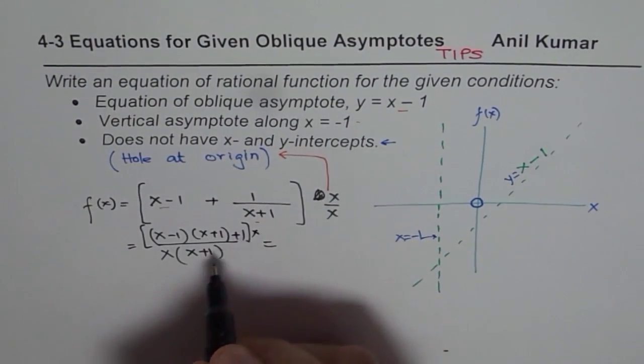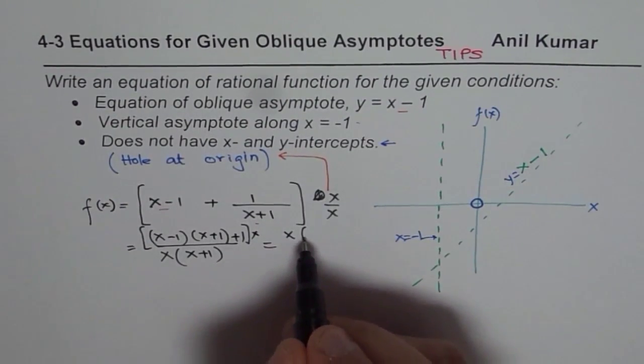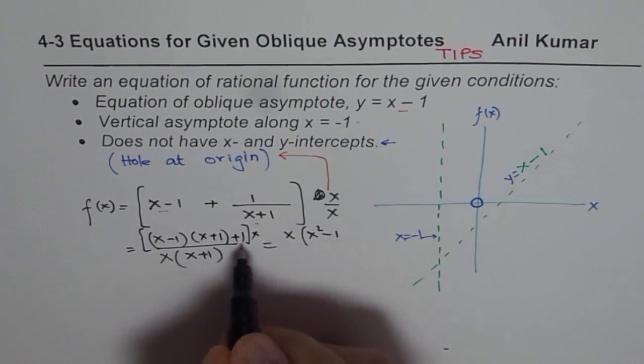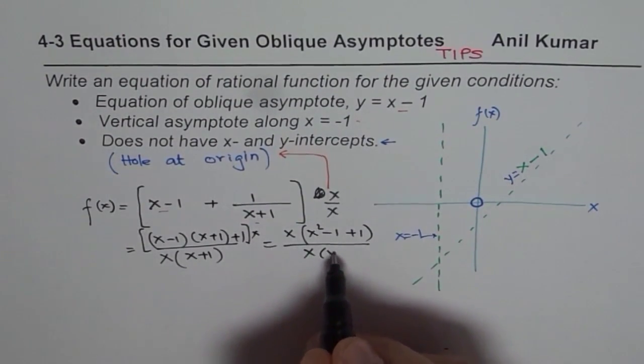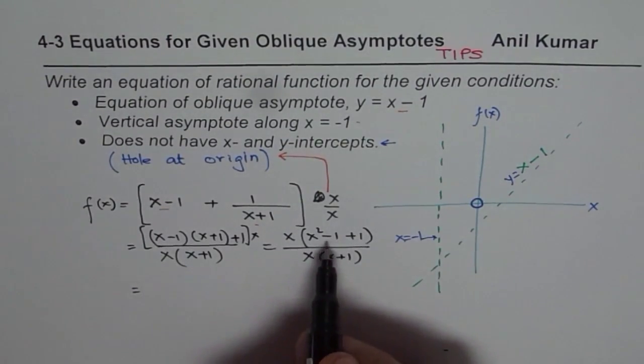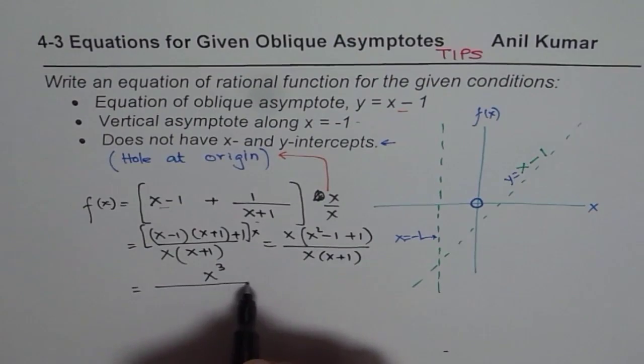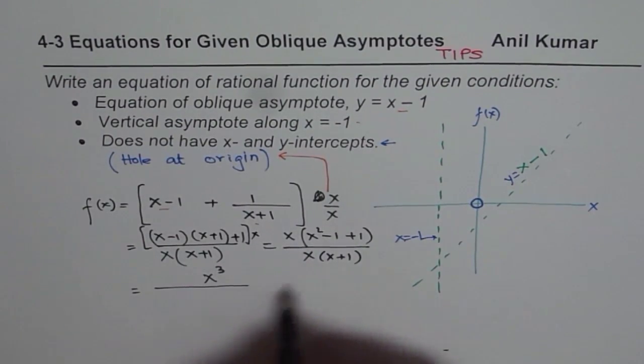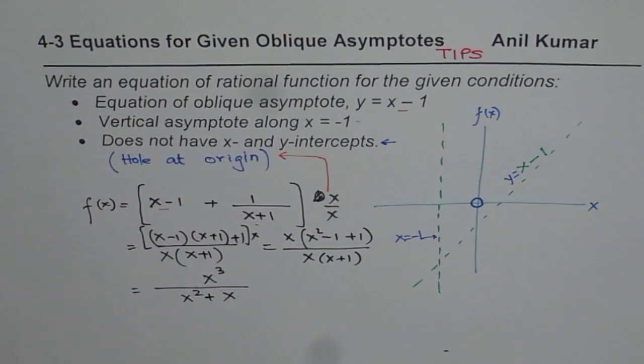everything multiplied by x here. So we have x times (x² - 1 + 1) divided by x times (x + 1). So this could be written as, -1 + 1 is 0, so you get x³ in the numerator and here you could write this as x² + x. So that becomes the function.